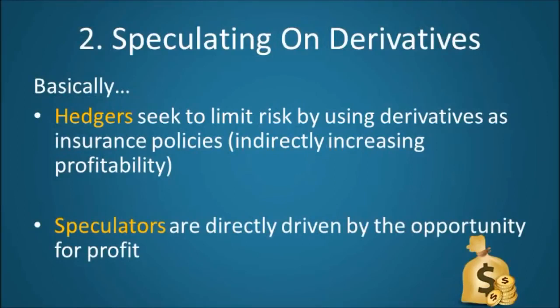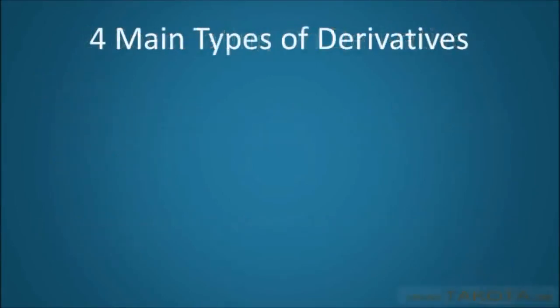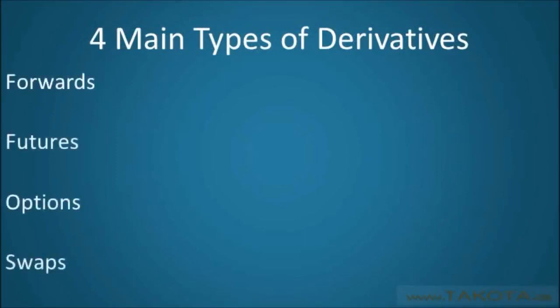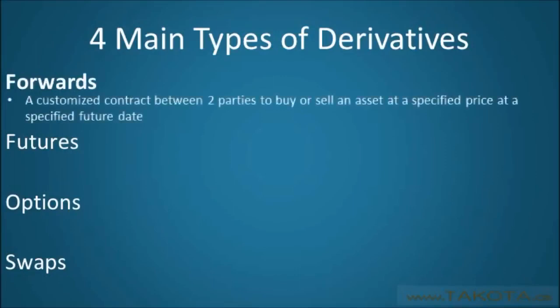Now that we have a basic understanding of how derivatives are used, let's take a look at the different types. There are four main types of derivatives: forwards, futures, options, and swaps. Each of these concepts will be addressed in greater depth in future videos. Here, our aim is only to provide a basic overview. With this in mind, let's begin with forward contracts. A forward is a customized contract between two parties to buy or sell an asset at a specified price at a specified future date. Forwards are not traded on a central exchange and as a result, they are not standardized or regulated, making them particularly useful for hedging.